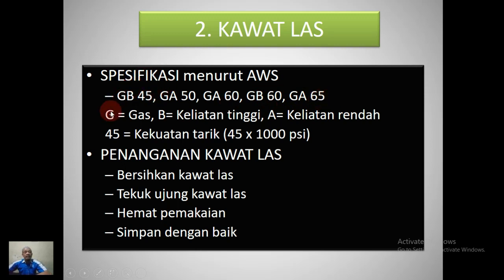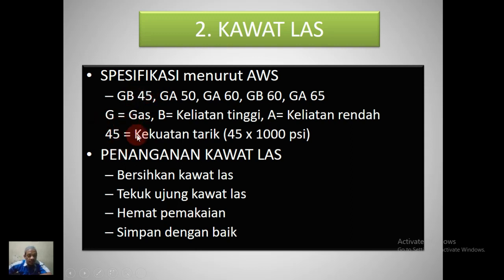Maksudnya apa? G itu gas. B itu berarti keuletan tinggi, A itu keuletan rendah. Kemudian angka di belakang GB atau GA, misalnya 45, maka akan punya kekuatan tarik minimal 45 x 1000 PSI, atau 45.000 PSI. Jadi maksudnya GB45, GA50, dan seterusnya adalah kode spesifikasi kawat las berdasarkan kekuatan tarik dan keuletan.